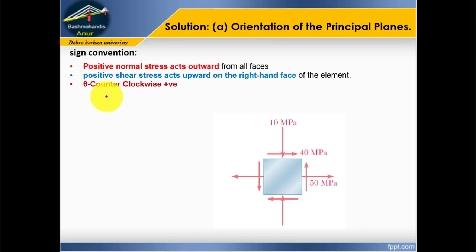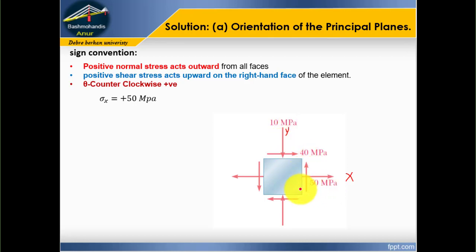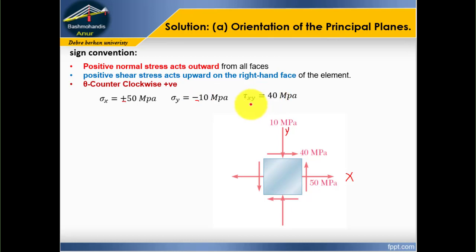Clockwise is negative. Now let us write the given values. Sigma X equals positive 50 MPa — this is the x-directional stress, and 50 MPa acts outward from the face. Sigma Y equals negative 10 MPa, because it is acting toward the face. Tau XY equals 40 MPa, because it is acting upward on the right-hand side — so this is positive.